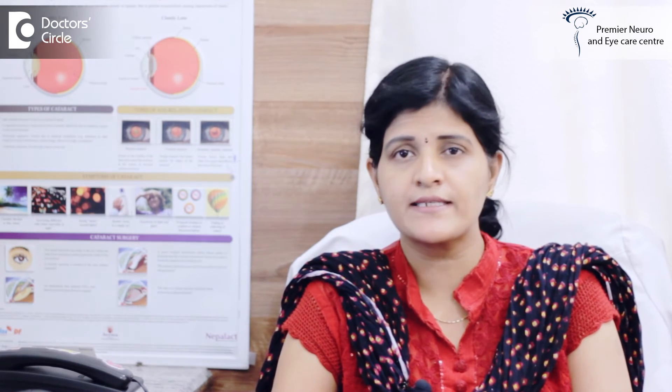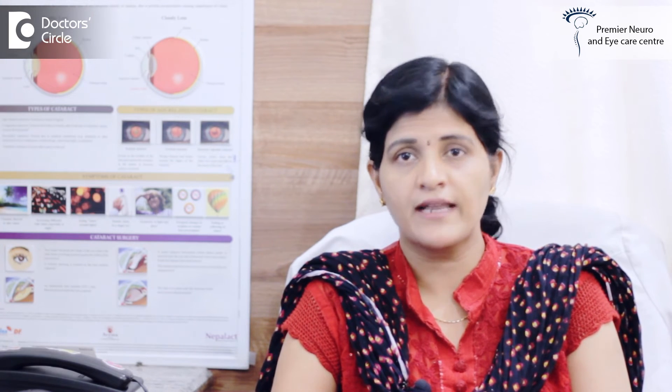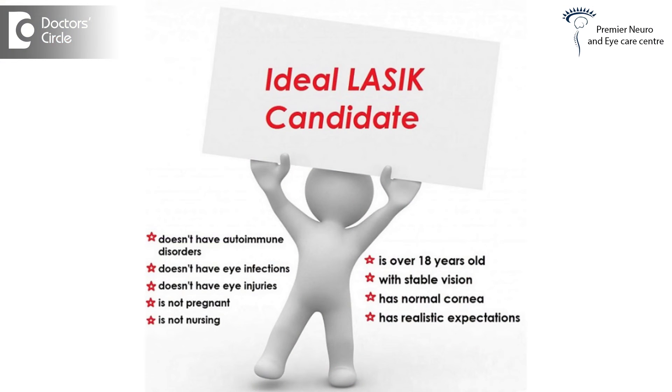Third, any other diseases of the eye must be ruled out — whether corneal conditions, retinal conditions, or glaucoma. Corneal conditions such as keratoconus or pellucid marginal degeneration are absolute contraindications for LASIK surgery. Additionally, patients with systemic conditions like collagen vascular disorders cannot undergo corneal ablation with laser, because the collagen tissues present in the cornea can behave very unpredictably after the procedure. Such candidates are not right candidates for LASIK.